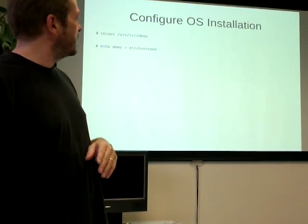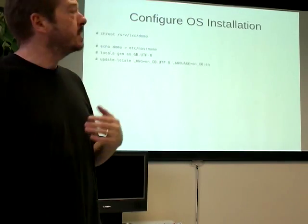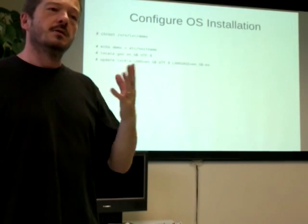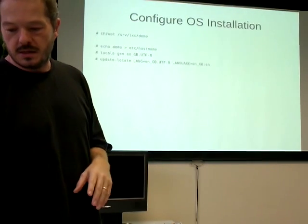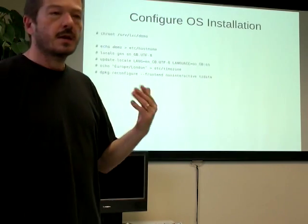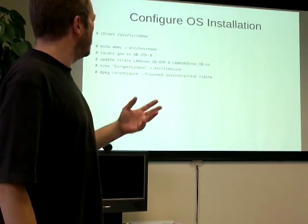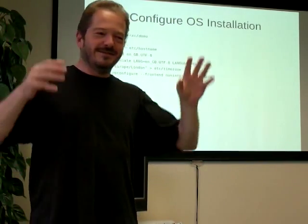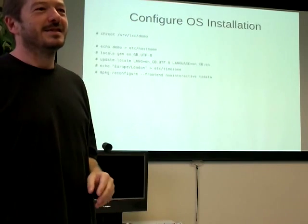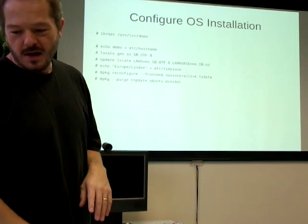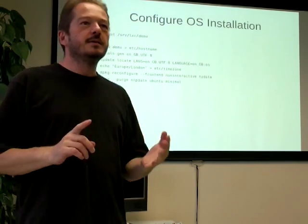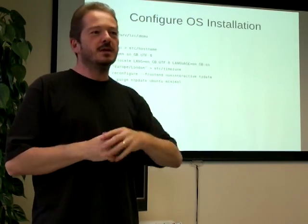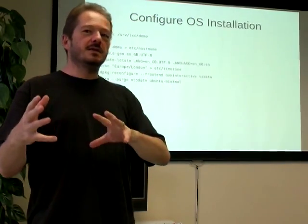Once you're in there, you can configure the hostname, generate locales and set that as the default — because otherwise you get all sorts of locale-related errors — and configure a timezone; Europe/London happens to be my favourite. The default installation installs ntpdate, so that when your network comes up it will try and set the time using ntpdate. But it's going to be inside a container — it can't do that, it's wasting its time. Just remove it, and you have to remove the ubuntu-minimal package because that's what's installed and it says you must have ntpdate.